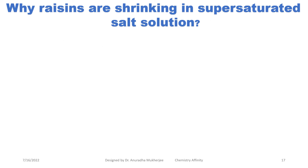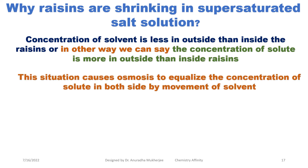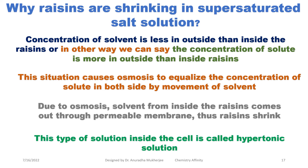Now why is this happening? From this observation, we can conclude that the concentration of solvent is less outside than inside the resins, which means the concentration of solute is more outside than inside the resins. So inside the resin the concentration of solvent is more, which means osmosis takes place and the solvent moves from inside the cell to outside, causing the resins to shrink. This kind of solution is called the hypertonic solution — that means when a cell has a lower concentration of solute compared to the outside, the solution inside the cell is called the hypertonic solution.